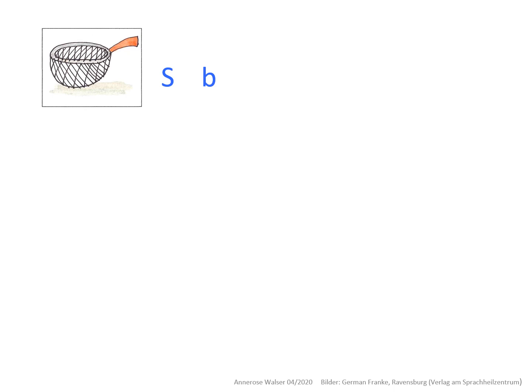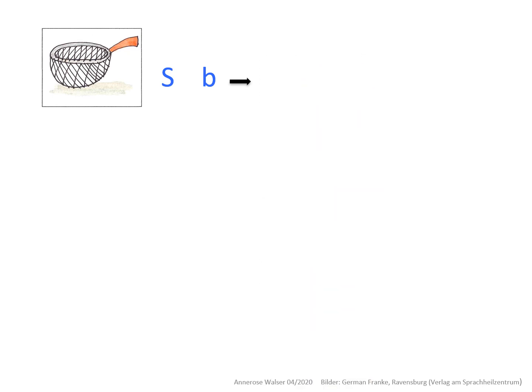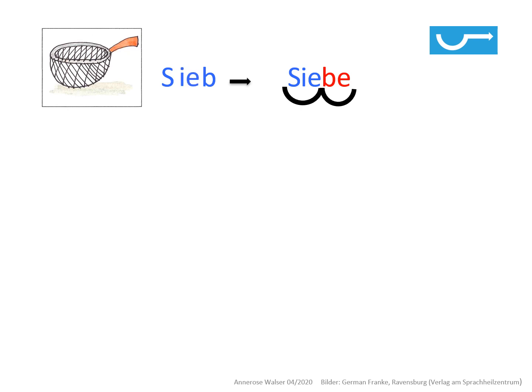Das Wort SIEB besteht aus einer Silbe. Ich bilde die Mehrzahl: ich verlängere also das Wort zu SIEBE. Und jetzt kann ich wieder den Trick anwenden. In der ersten Silbe kommt nach dem S die Lücke für das I oder das IE und kein weiterer Buchstabe. Das heißt, ich brauche wieder das IE. Dann weiß ich, dass man auch das Wort SIEB mit IE schreibt.